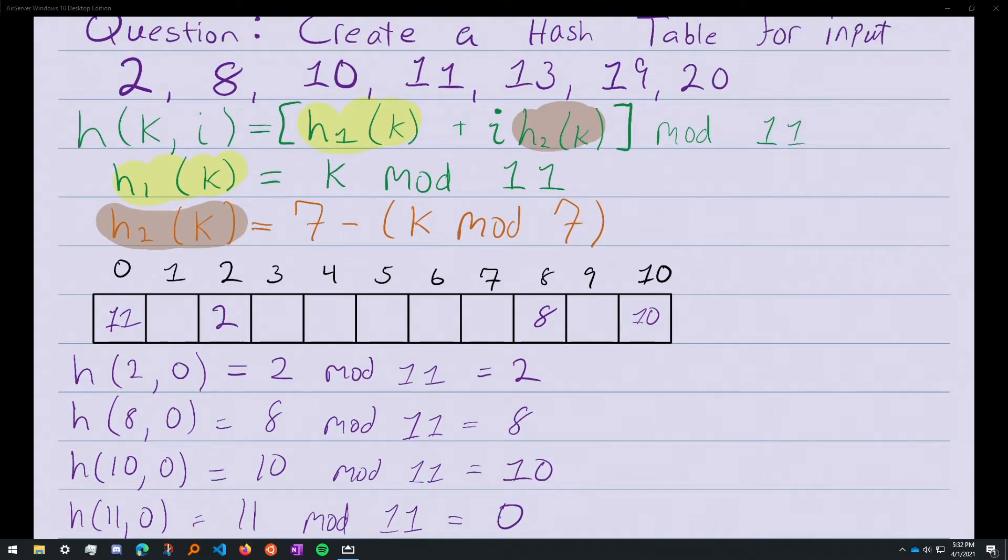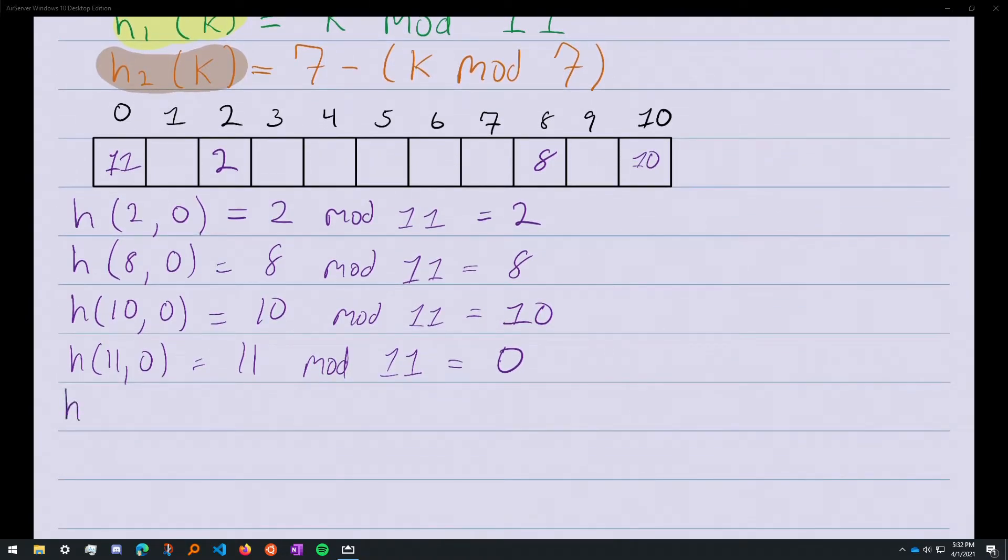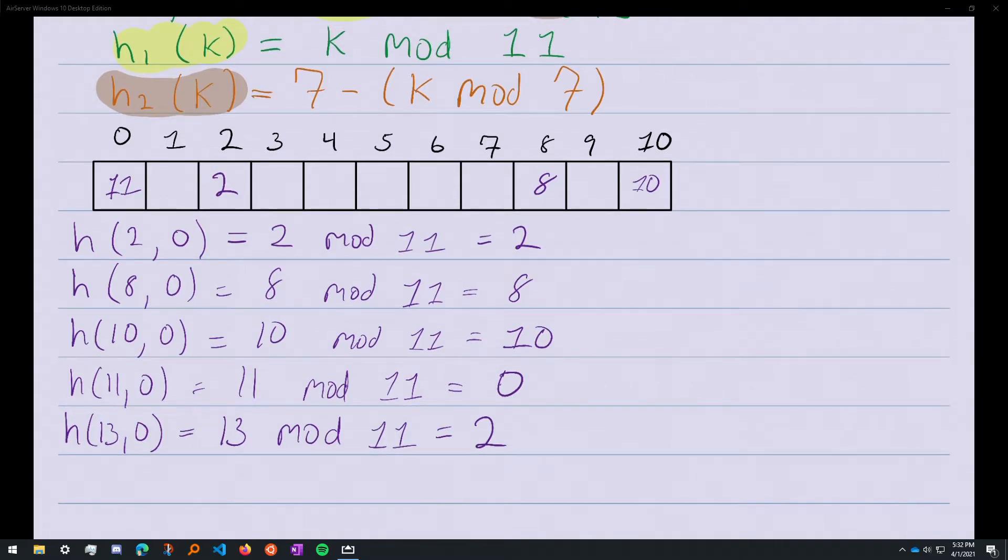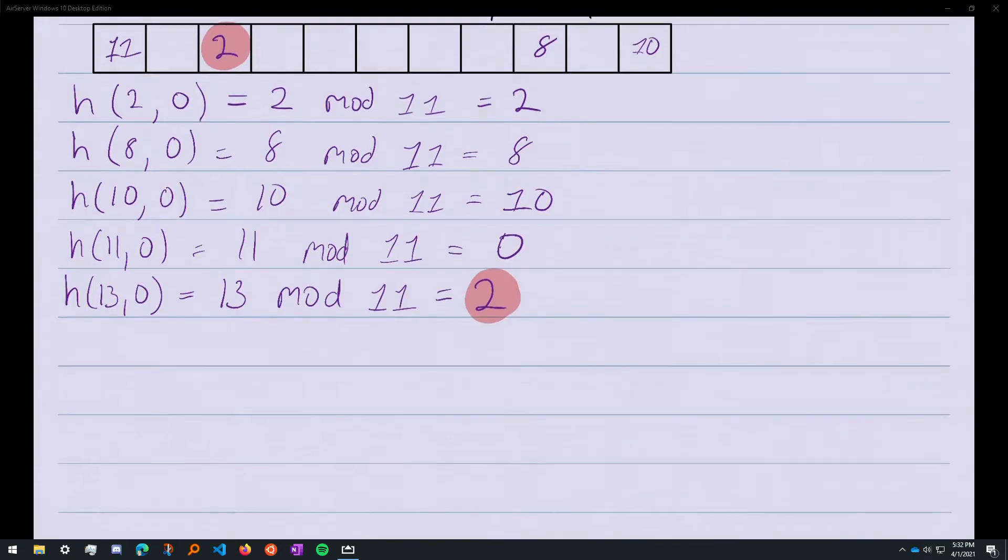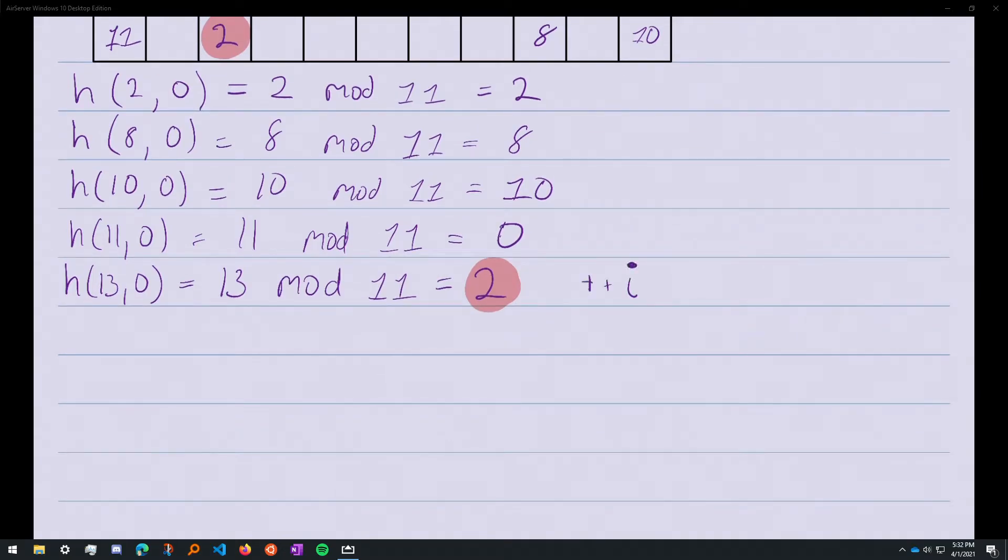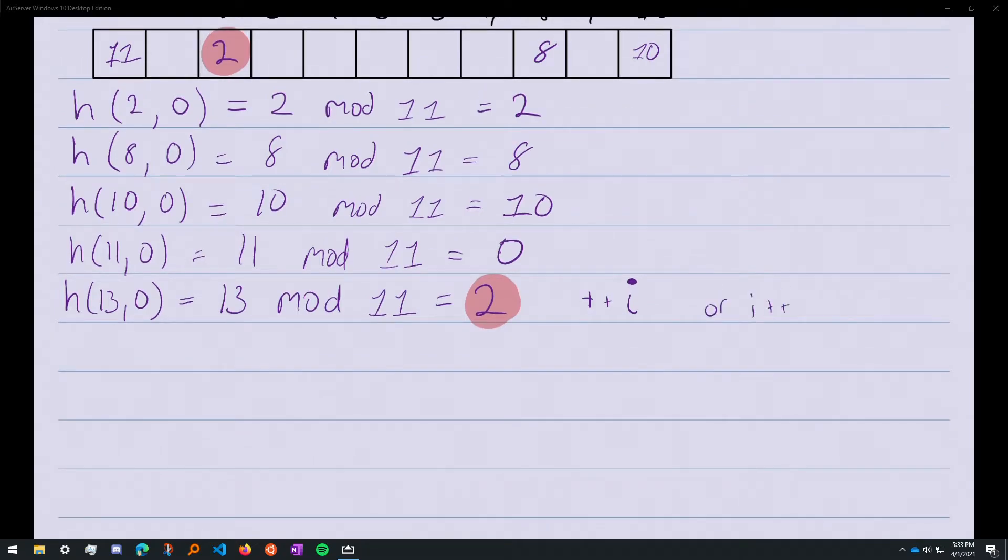Now we need to put in 13. 13 mod 11 equals 2. Is there a collision? Yes, there is, right here. We can't put it into 2 because it's already filled. So the double hashing method says at this point you increment i by 1, and retry the hash function with the new i. So 13 now with i=1.